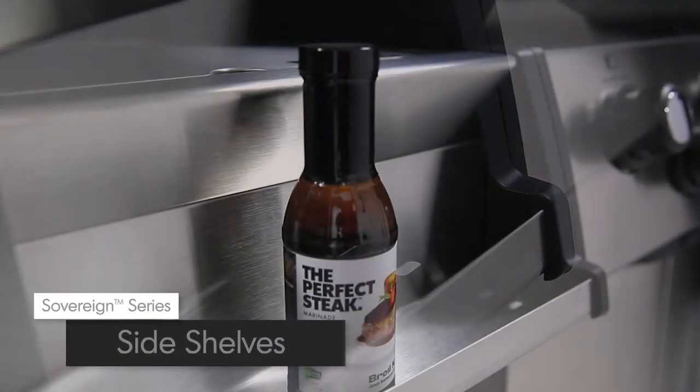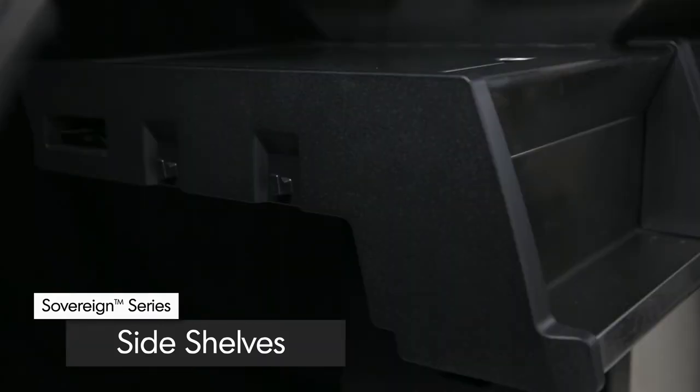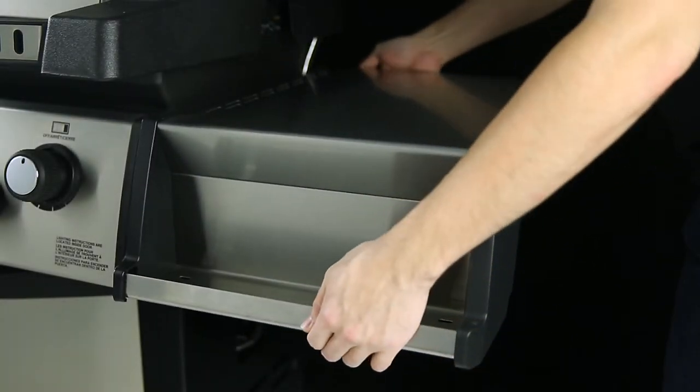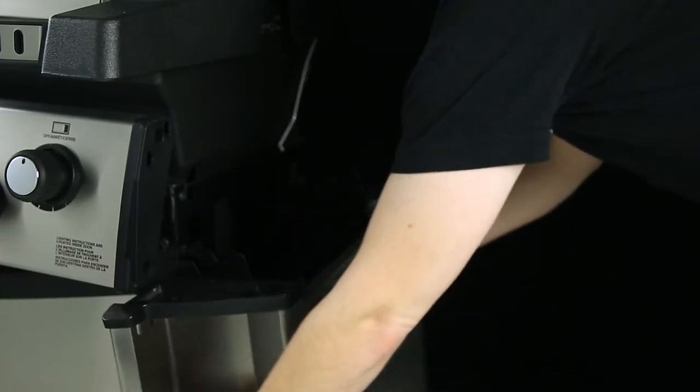The stainless steel side shelves come with condiment bins and tool hooks to keep all of your grilling essentials close at hand. The shelves are designed to fold down for easy storage in tight spaces.